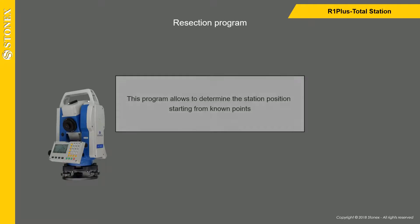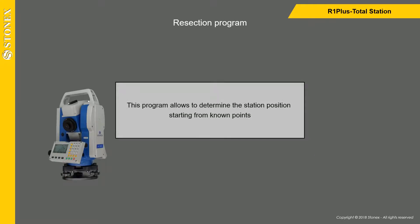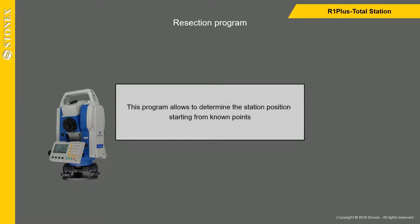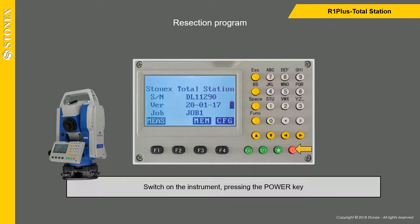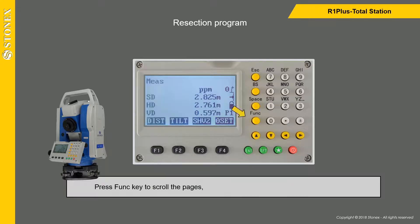This program allows you to determine the station position starting from known points. At least two points are necessary to calculate station coordinates. Switch on the instrument by pressing the power key, then press the F1 key to enter the measure menu.